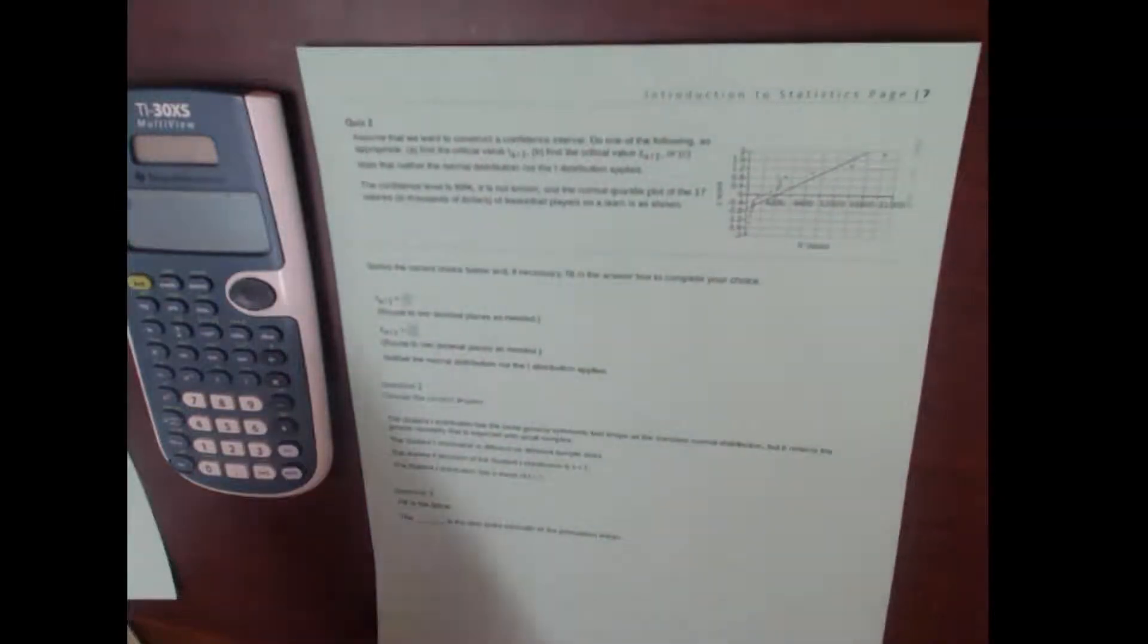You'll remember that I said that in order to do a t-distribution, you either need 30 people in your sample or more, or you need to have your data come from a normal distribution.